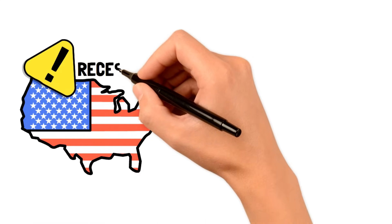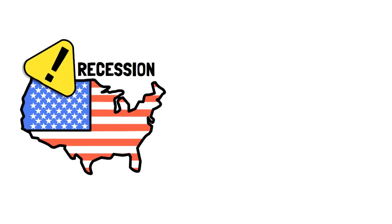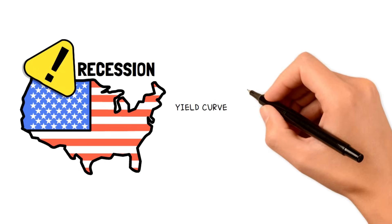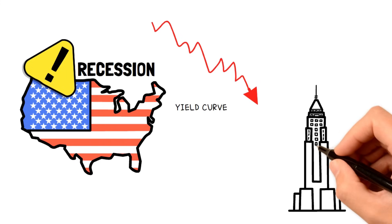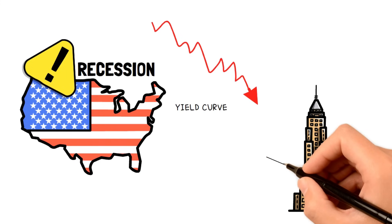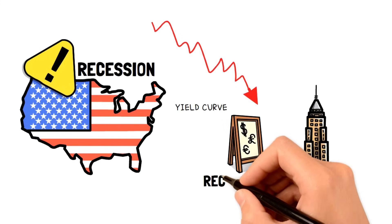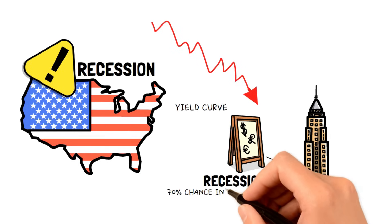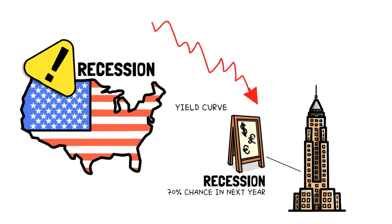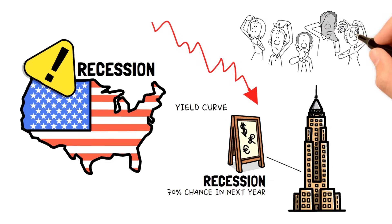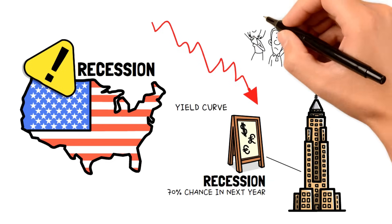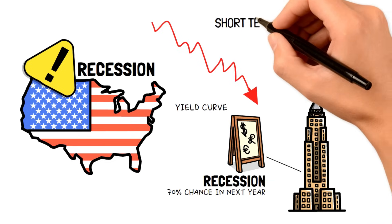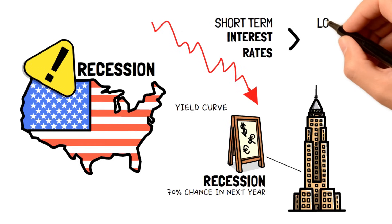Yield curves, particularly when they invert, are one of the best ways to anticipate a recession. And currently, as per the New York Federal Reserve's model, there's a substantial likelihood of a recession in the next 12 months with an almost 70% chance, which is notably higher than any historical trend has indicated so far. That said, are you wondering what an inverted yield curve is? An inverted yield curve happens when short-term interest rates surpass long-term ones. Put simply, it means that those rates on short-term loans or investments are now higher than those with longer terms.